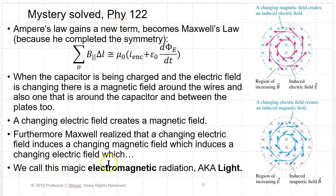Furthermore, Maxwell realized that a changing electric field induces a changing magnetic field, which induces a changing electric field, which induces a changing magnetic field, and so on. We call this electromagnetic radiation. To a physicist, that's light — any kind of electromagnetic radiation is considered to be light.